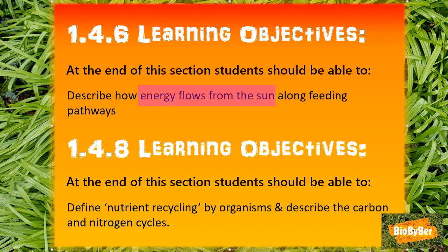At the end of the first section, you should be able to explain that all the energy in living things really comes from the Sun. In the second section, you have to be able to explain that the nutrients that make up the bodies of living things are recycled and used over and over again.